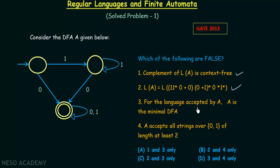The third statement says: for the language accepted by A, A is the minimal DFA. This means this DFA cannot be minimized further — it will have 3 states and not fewer. To verify, we need to try minimizing this DFA using the minimization technique.